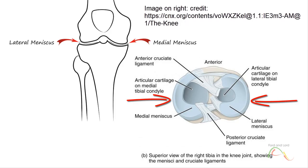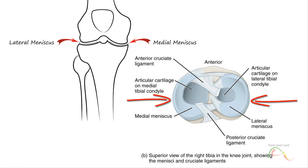The medial meniscus is located between the medial condyle of the femur and the medial condyle of the tibia. The lateral meniscus is located between the lateral condyle of the femur and the lateral condyle of the tibia. Each meniscus is thin along its inner margins and thick along the outer margins. They are attached to the tibial condyles but do not attach to the femur.